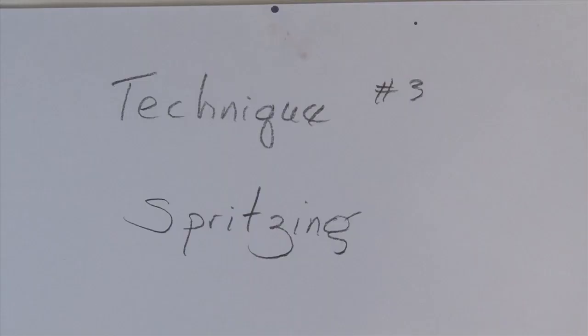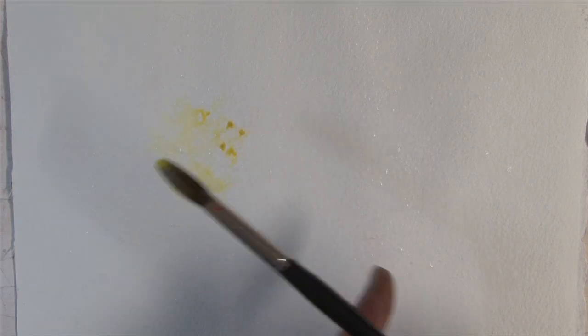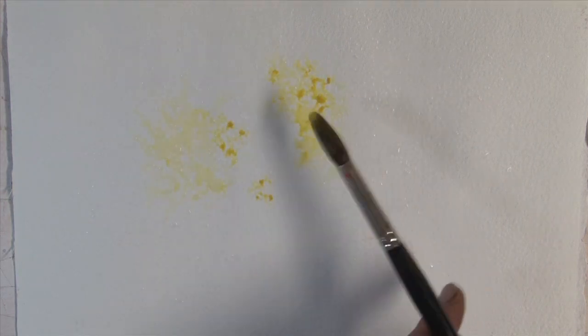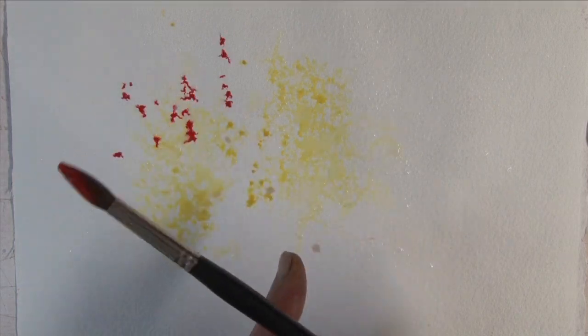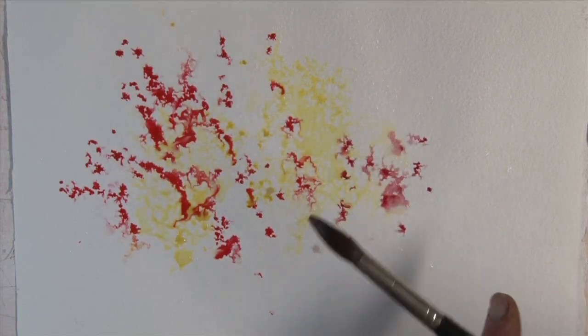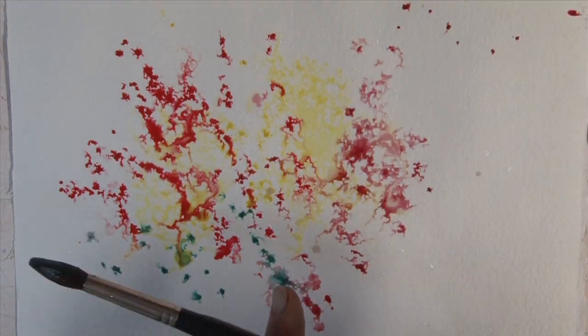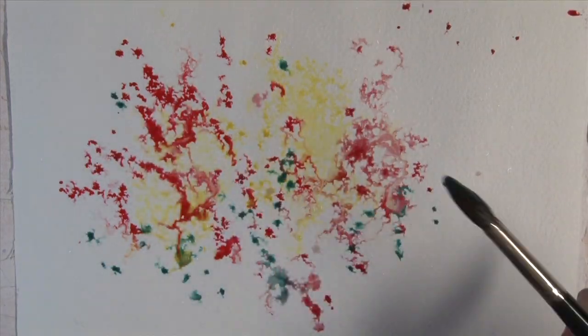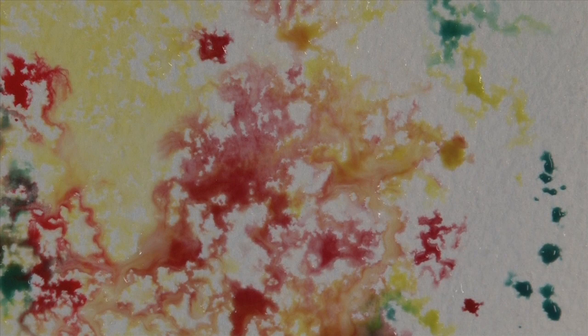Another technique is spritzing the paper. You can see how the paint flows out on contact with the water droplets. Here are some close-ups of the effects.